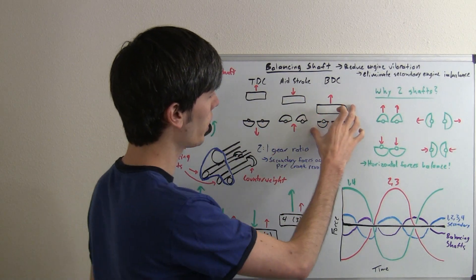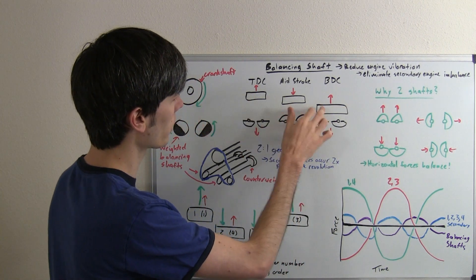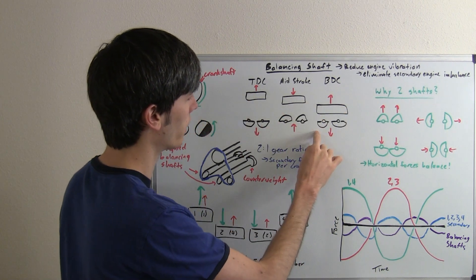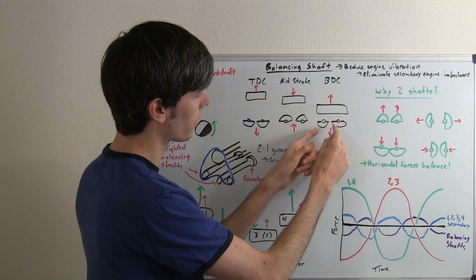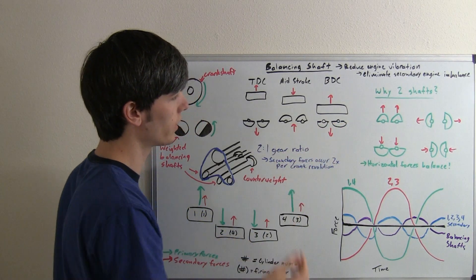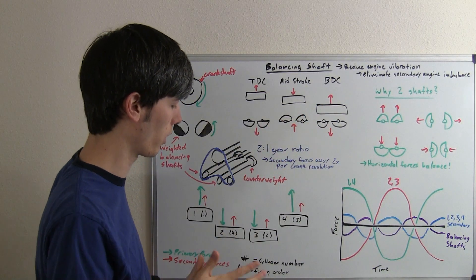Once you hit bottom dead center, the secondary force is going to be pointing up once again. You need these balancing shafts to rotate another 180 degrees, and then the force will be going downward and counteract that secondary force.